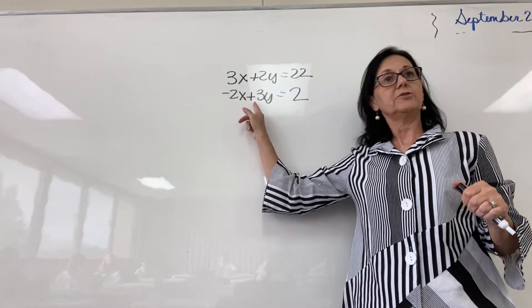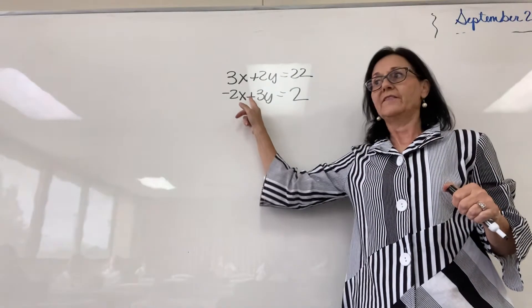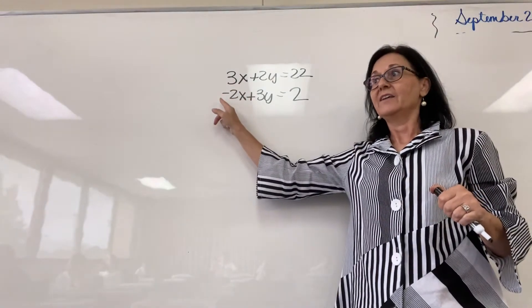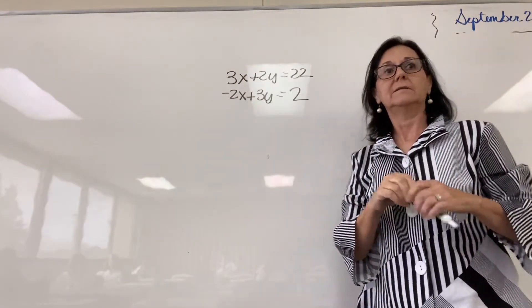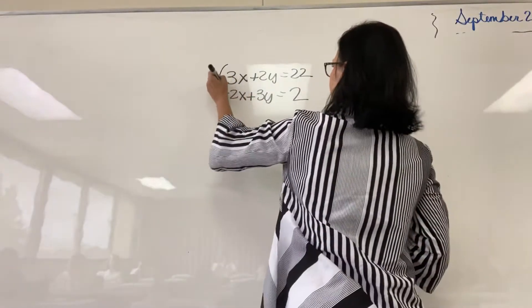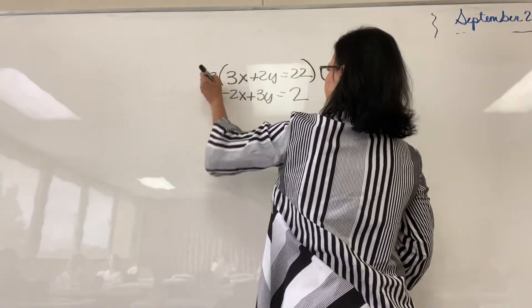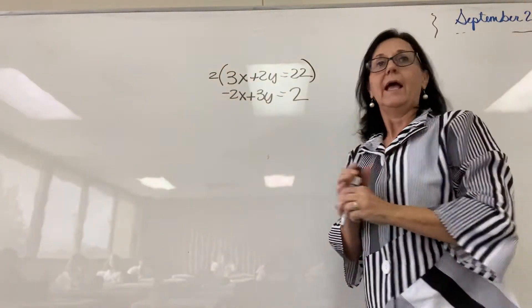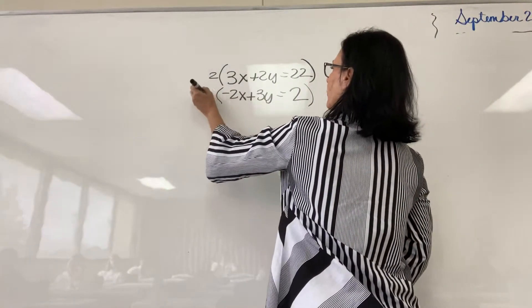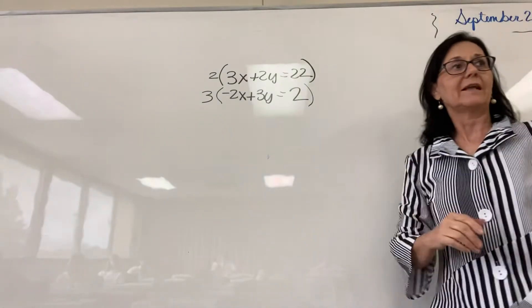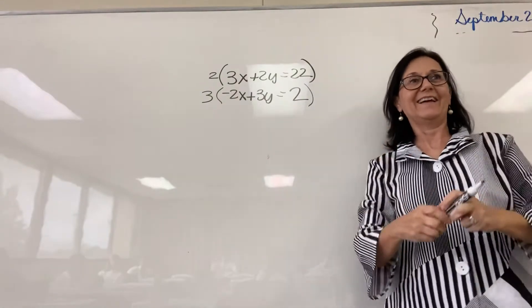Which one would you change? The x's. You're exactly right. What are we going to multiply this first equation by? The top one. By positive 2. Every term. And what are we going to multiply the bottom one by? 3. I heard it. Someone said it. Yes. Very good. Thank you.